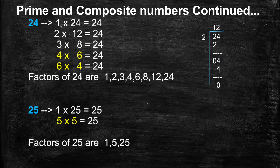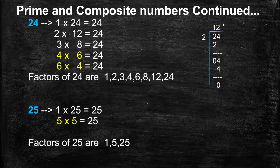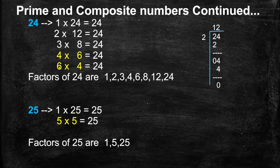Next, 24. 1 is a factor of every number, so 1s are 24, 24. 24 is a multiple of 2 because the ones place is an even number. When we divide 24 by 2, we get quotient 12. So 2s are 12, 24. 24 is a multiple of 3, which is 3s are 8, 24. 24 is a multiple of 4, which is 4s are 6, 24. 24 is not a multiple of 5. But 24 is a multiple of 6, which is 6s are 4, 24. We stop here because 4 and 6 have occurred earlier.